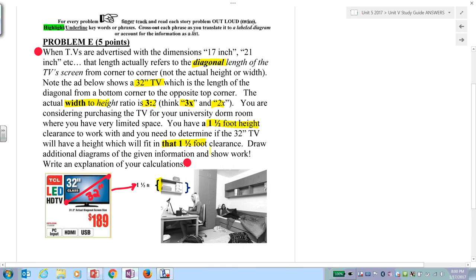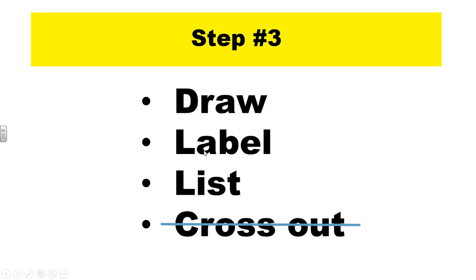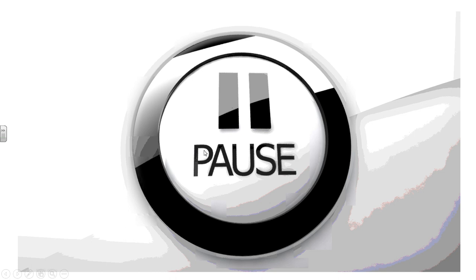You have a one-and-a-half-foot height clearance to work with, which is 18 inches. You need to determine if that 32-inch TV will fit in that one-and-a-half-foot clearance. Draw additional diagrams as necessary. Follow draw, label, list, cross out. Pause the video and do your own drawing.